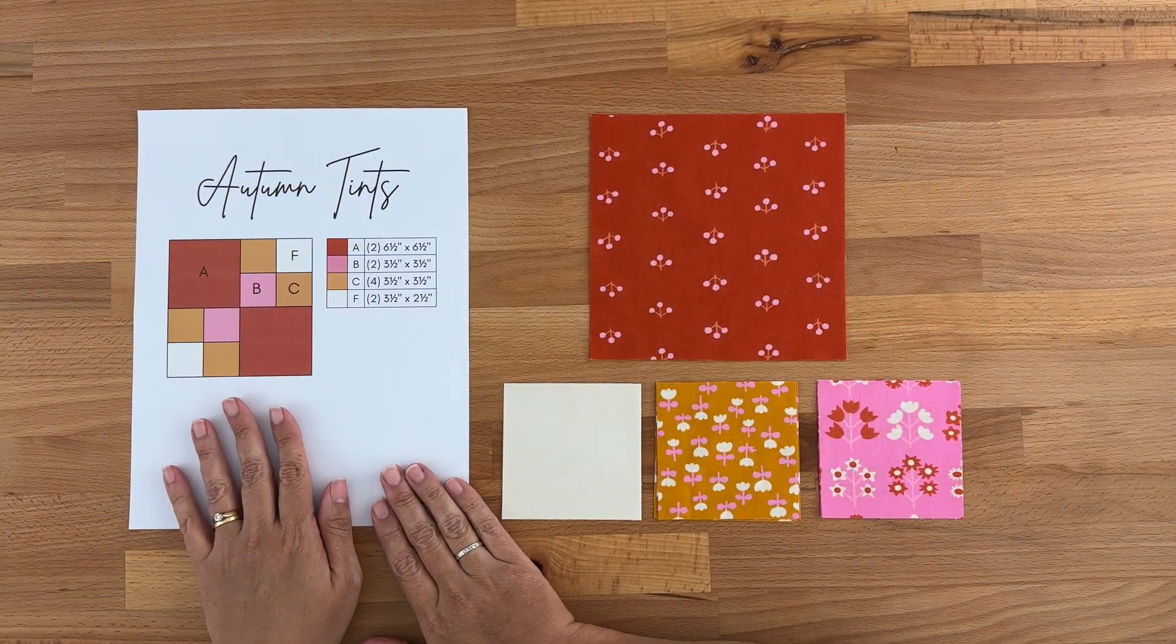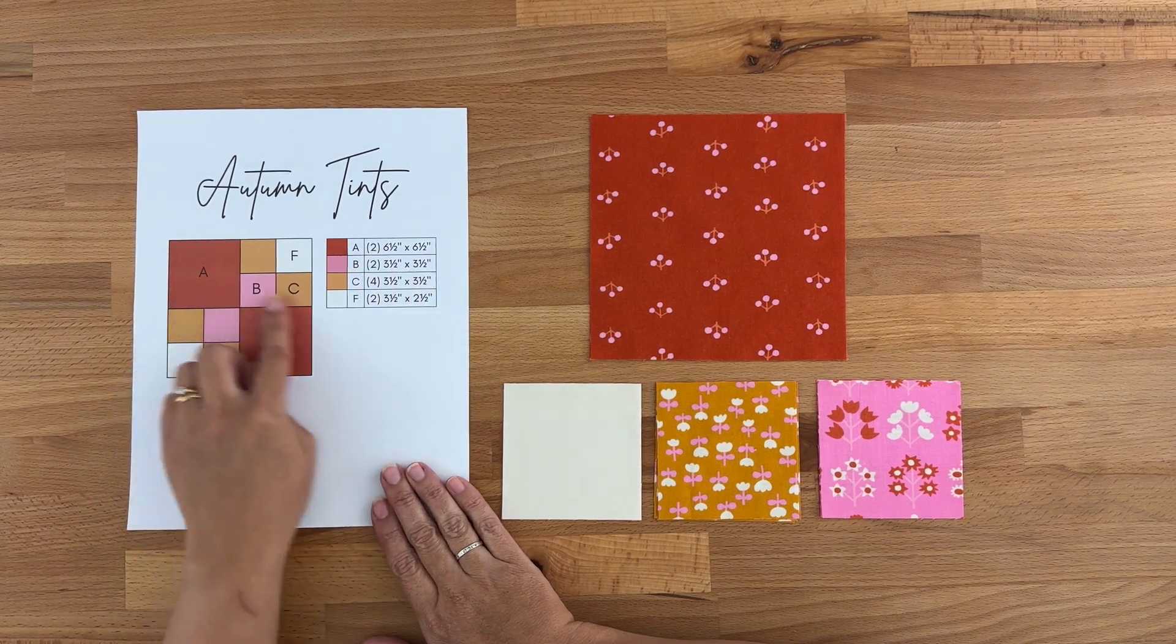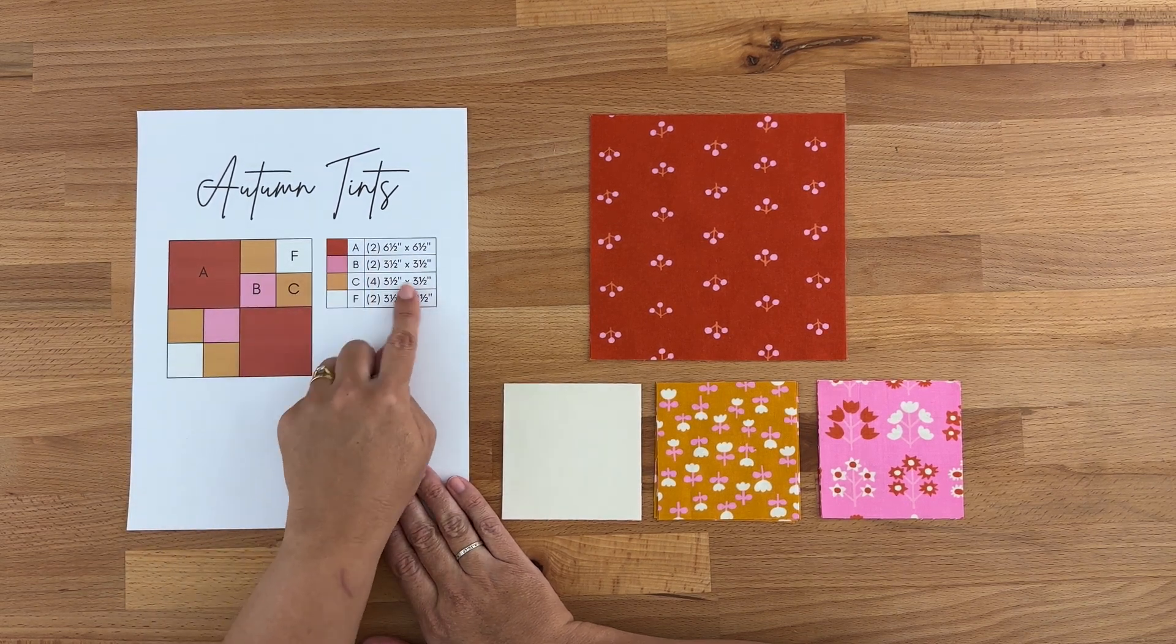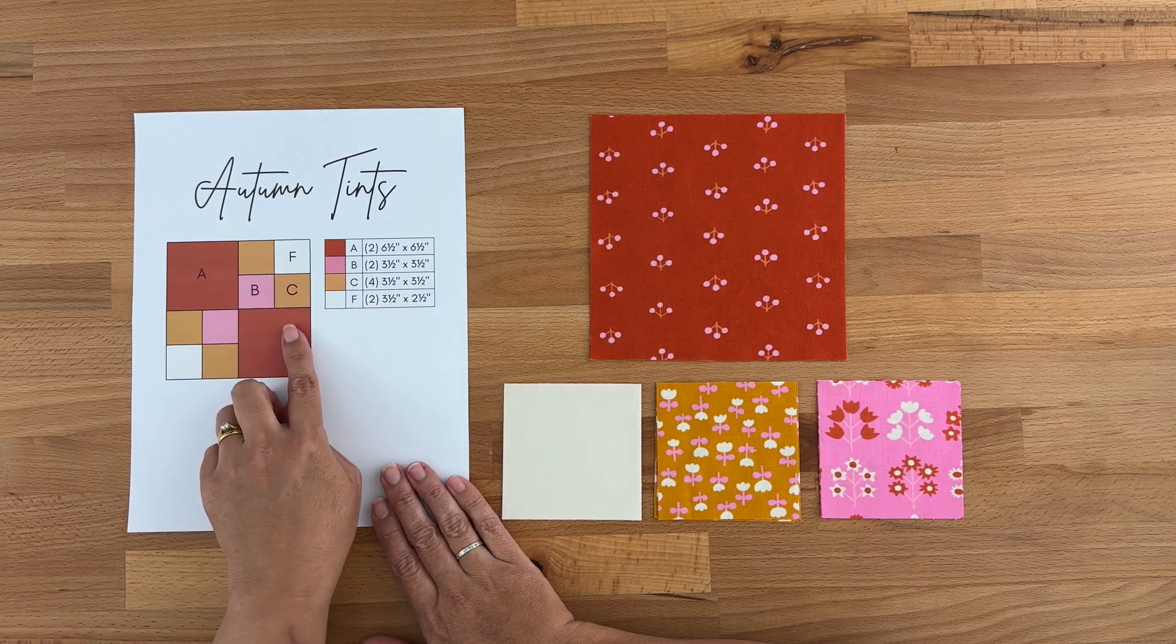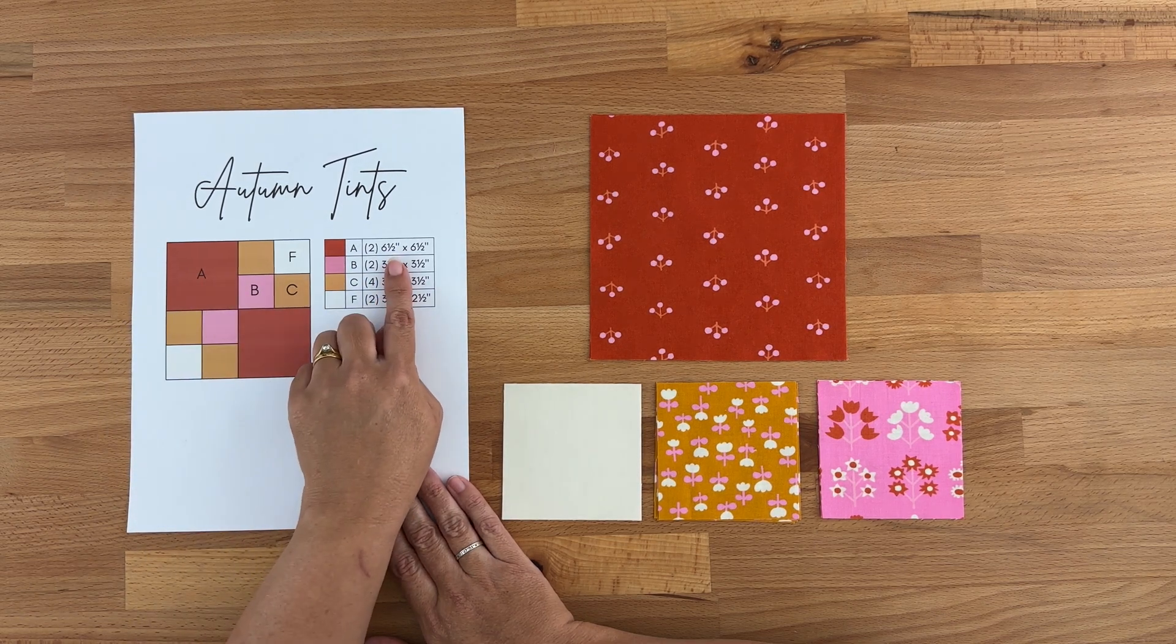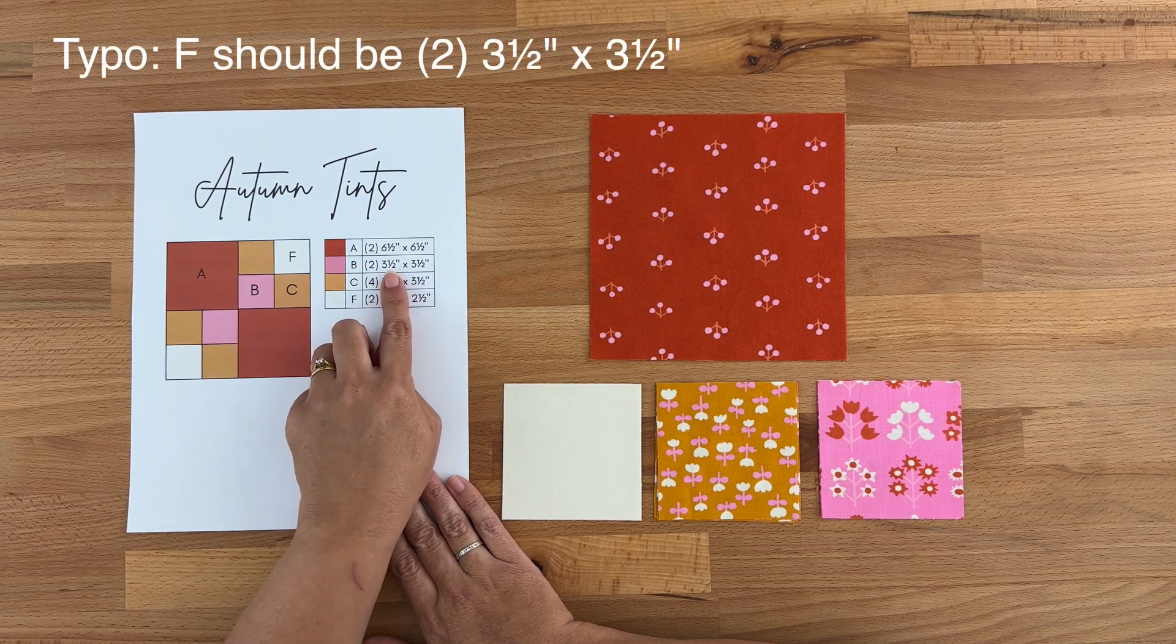Our cutting instructions to make the Autumn Tints Block is really simple. You just need four different fabrics and I've got the chart here showing you what to cut the pieces at. For these A pieces it's two pieces at six and a half inches by six and a half inches.